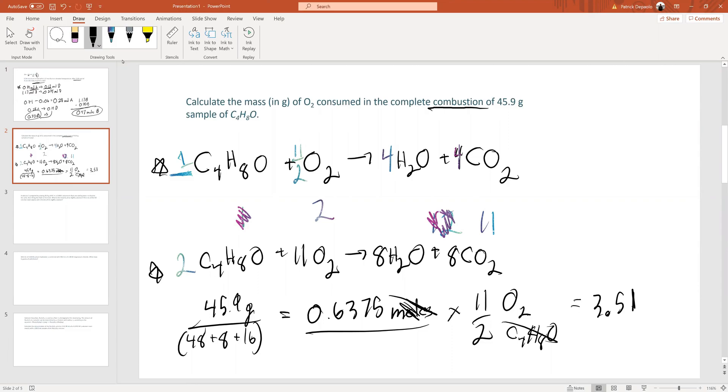Now the question is asking for how much grams. So we can multiply our moles by the molar mass of O2, which is 32, and we get 112 grams of O2. So that's how you do that one.